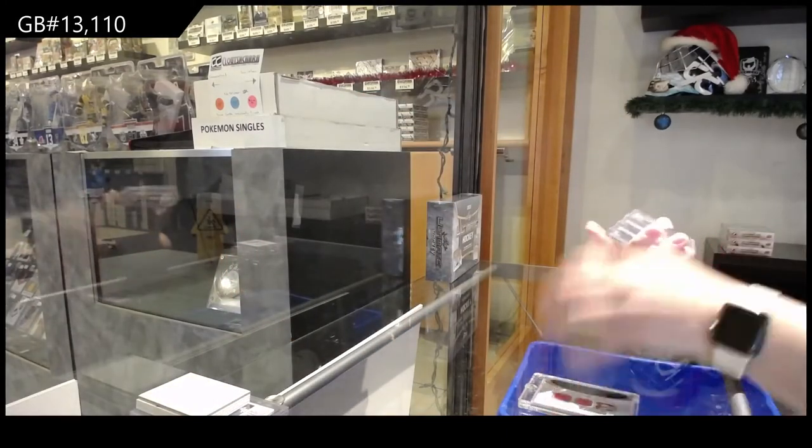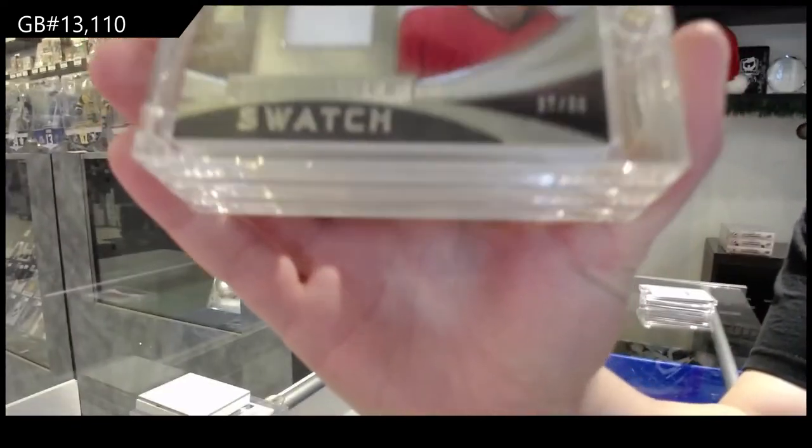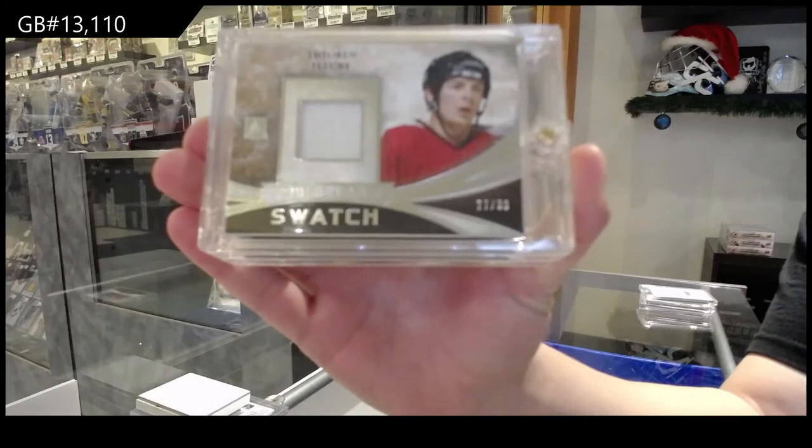We've got a Superlatives Watches jersey, numbered 27 of 30 for the number 7 spot of Theron Fleury.